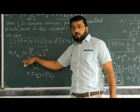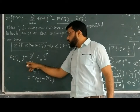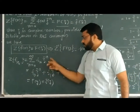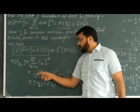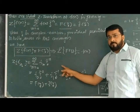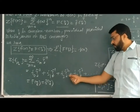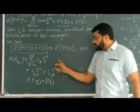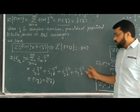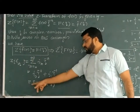Expanding the Z-transform summation from n = 0 to infinity of f(n) z^(-n): putting n = 0 gives f0 * z^0; n = 1 gives f1 * z^(-1); n = 2 gives f2 * z^(-2); and so on. This entire expression, involving f0, f1, f2, f3, etc., is denoted as F(z).